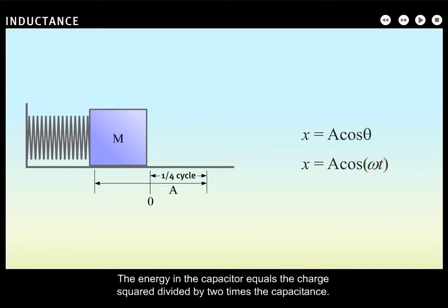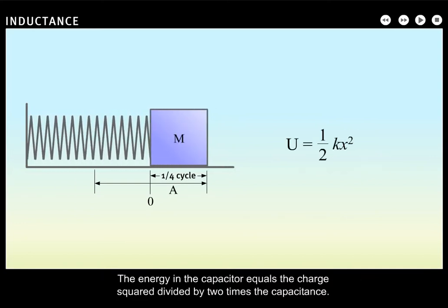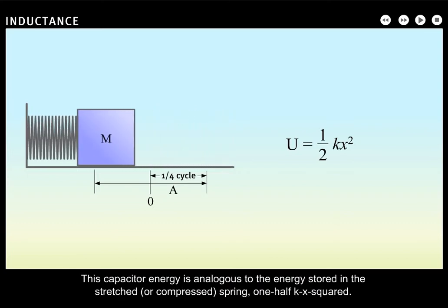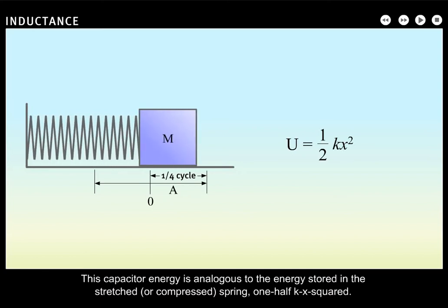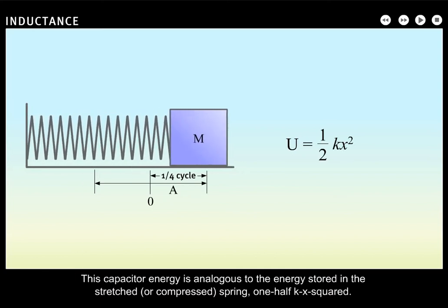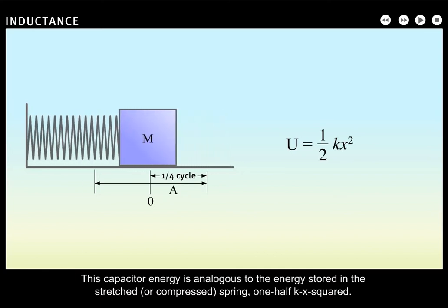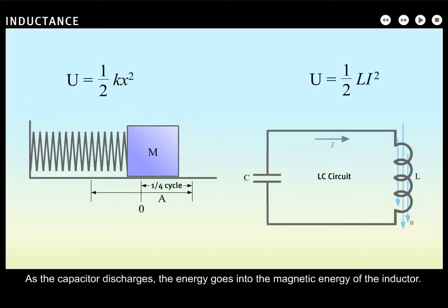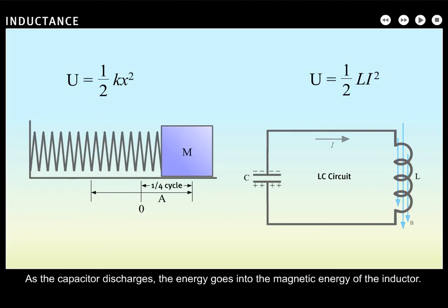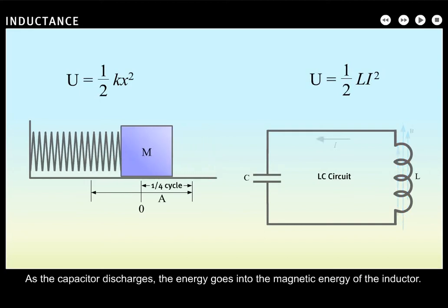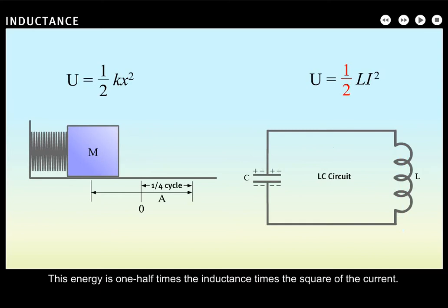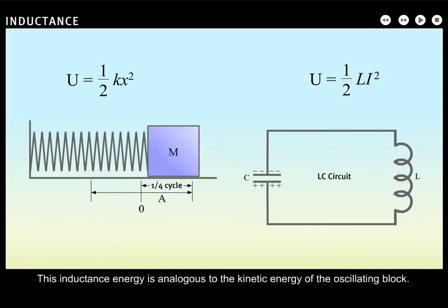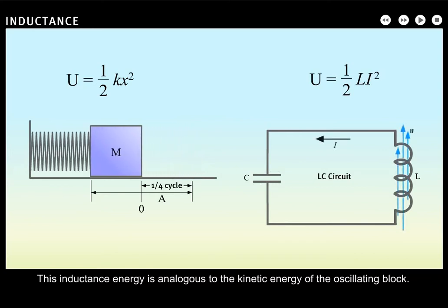The energy in the capacitor equals the charge squared divided by 2 times the capacitance. This capacitor energy is analogous to the energy stored in the stretched or compressed spring, one-half K X squared. As the capacitor discharges, the energy goes into the magnetic energy of the inductor, which is one-half times the inductance times the square of the current. This inductance energy is analogous to the kinetic energy of the oscillating block.